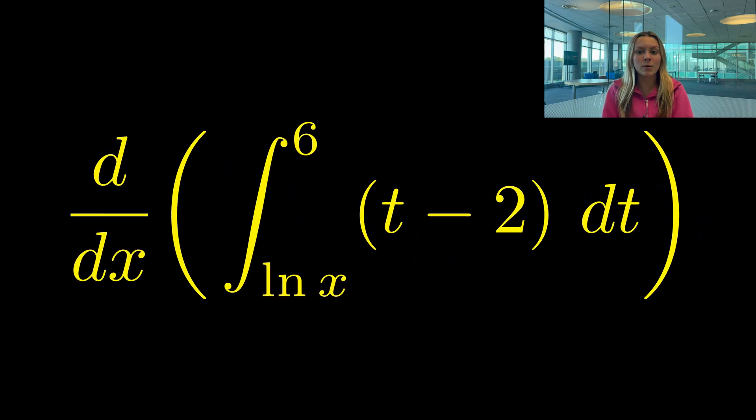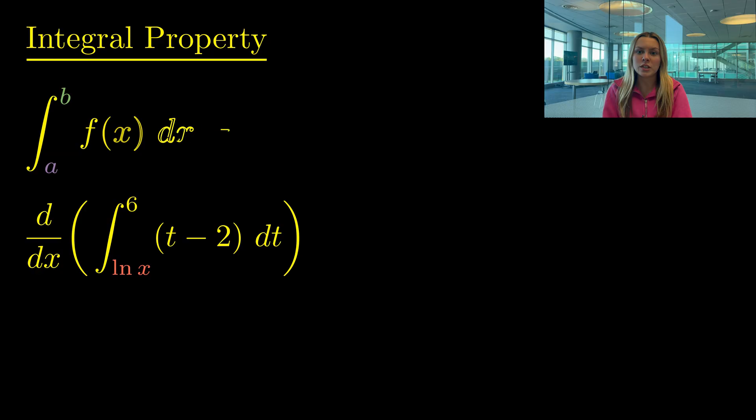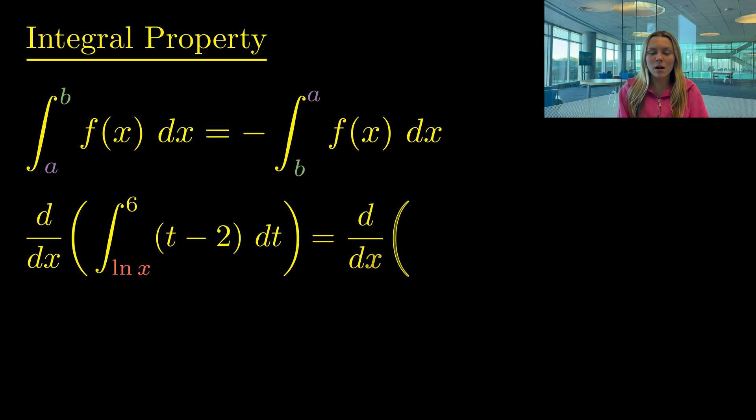Our third example is similar to the previous one, but it involves one more step at the beginning. Notice that ln(x) is the bottom limit and not the upper limit of our integral. So before using FTC, we have to use this integral property, which says that if we want to switch the limits of the integral, we have to negate the integral. Using this property, we thus negate our integral so that ln(x) can become the upper limit instead of the lower limit.